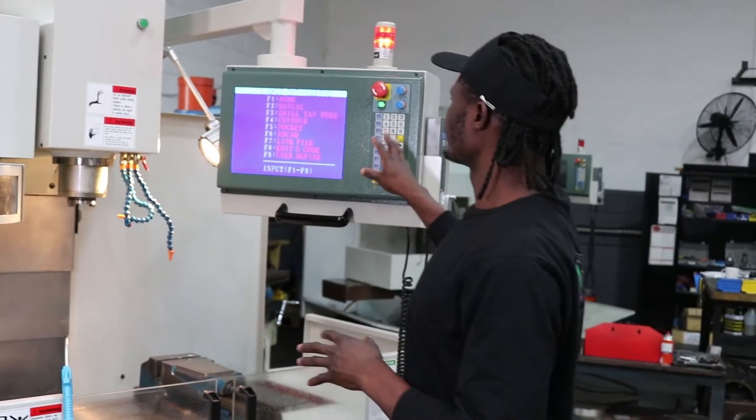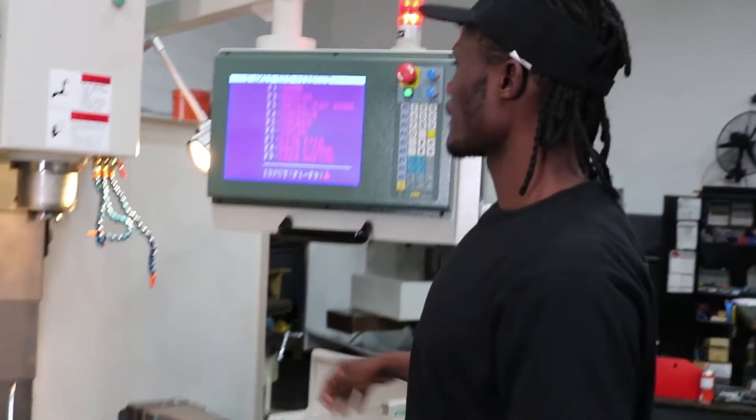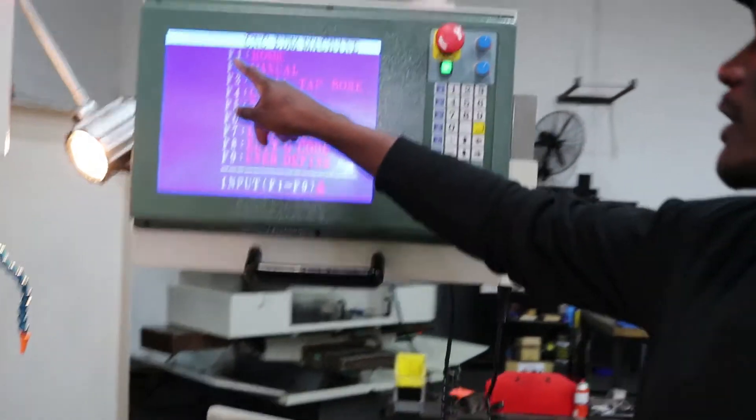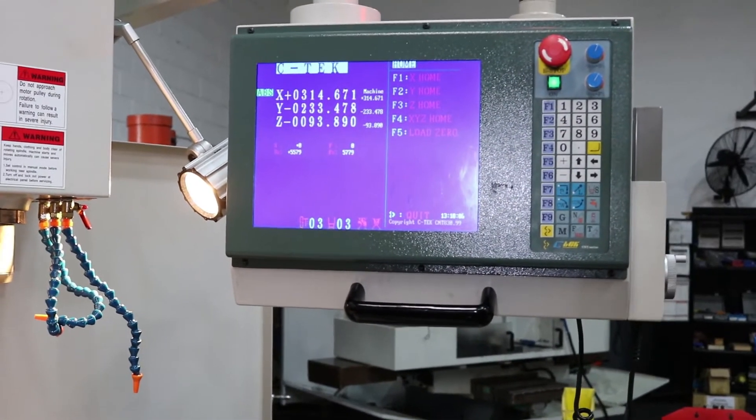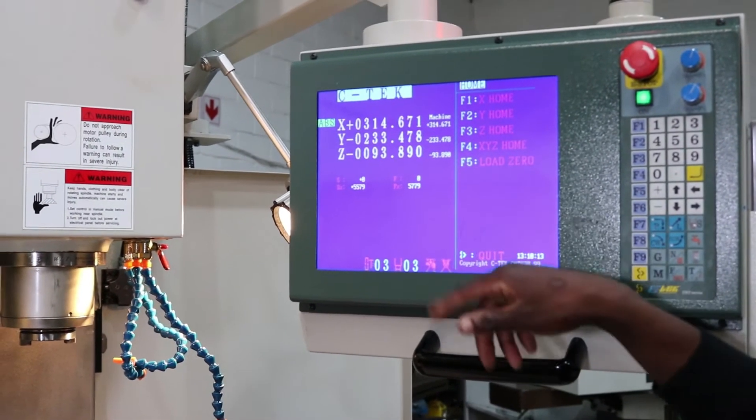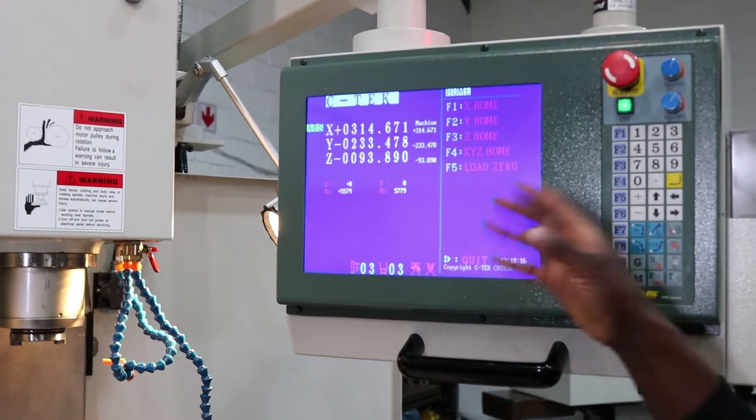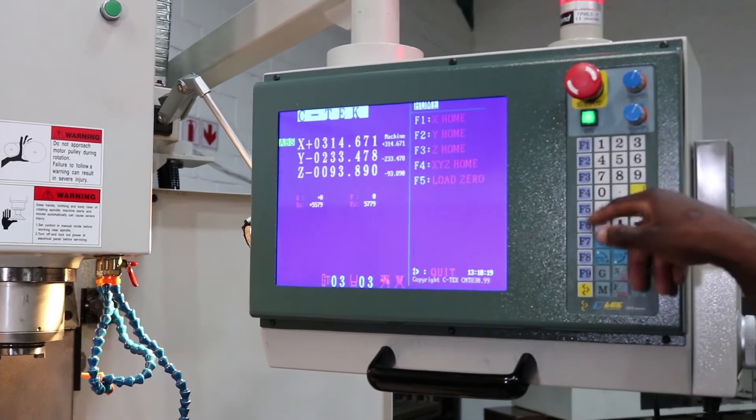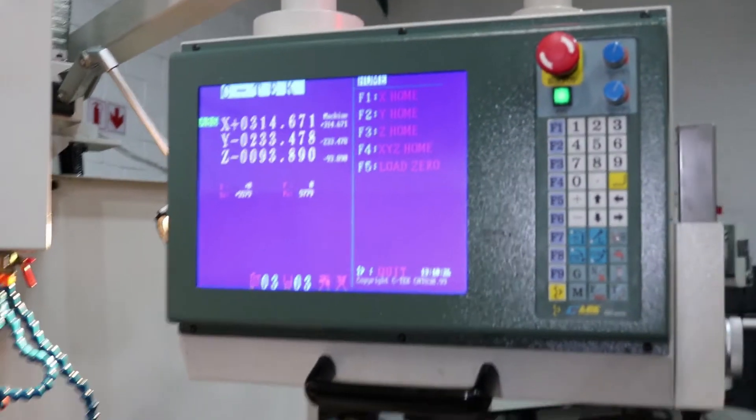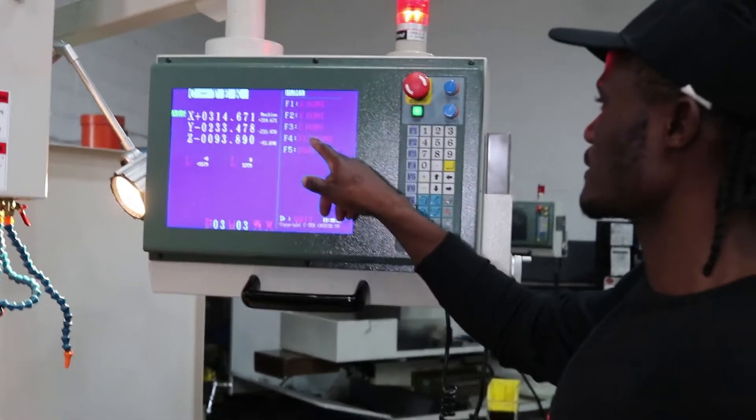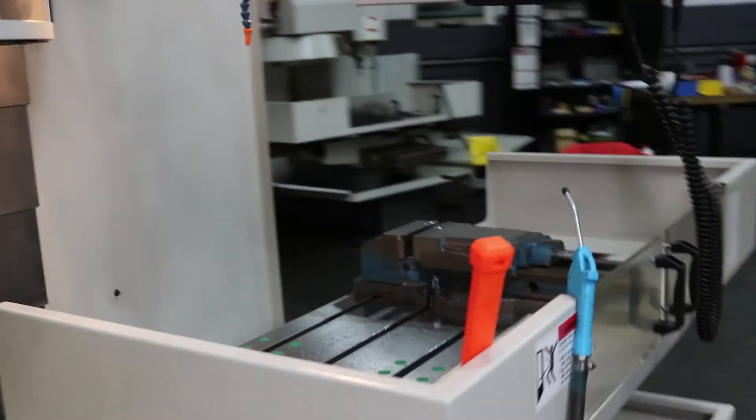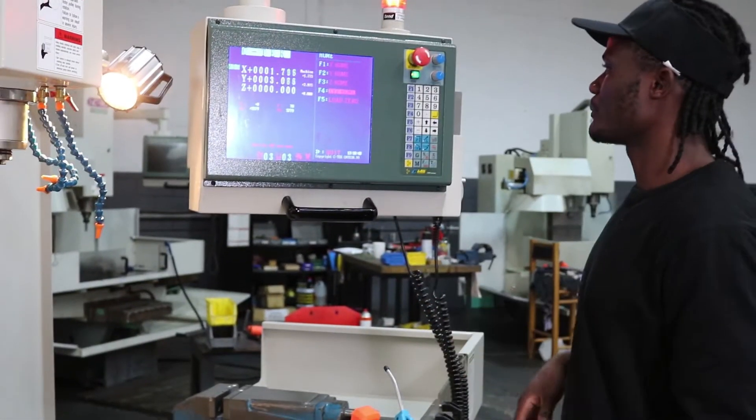As you switch on the machine your home page will appear and you want to warm the machine, that's the first thing you want to do before you start using the machine. Here it says F1 that's where your home is so you press F1 here on the page. It gives you the warm screen and it says X warm, Y warm, Z warm. Now you want to warm the machine so you go in F4 that's XYZ home so you press F4 and you can see that the machine starts warming.